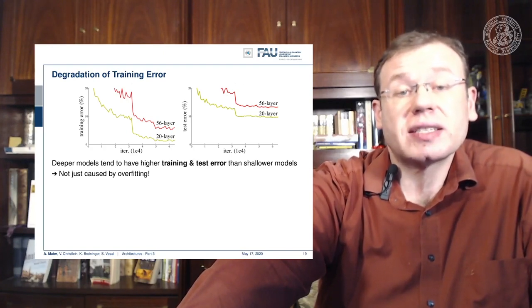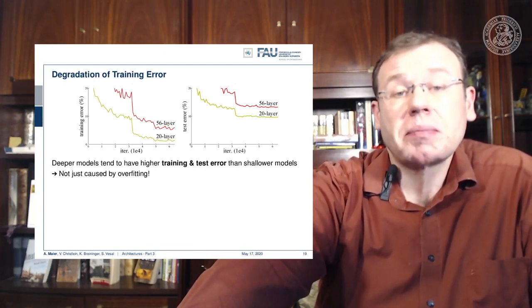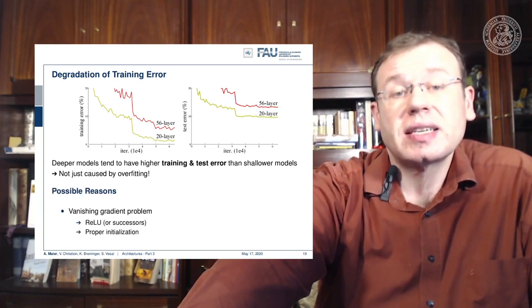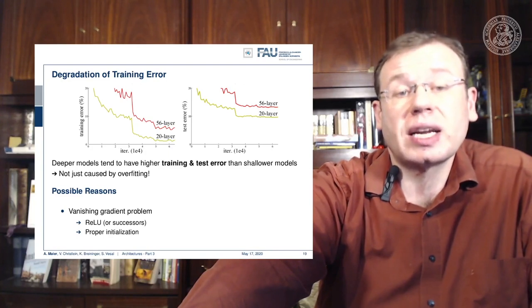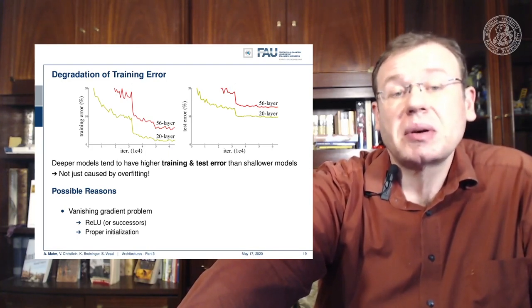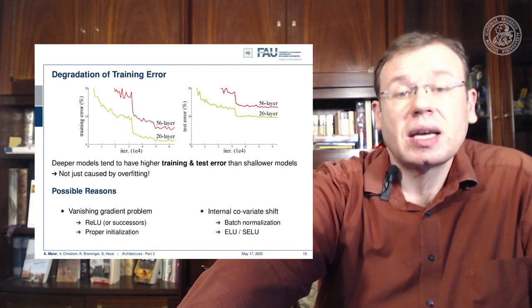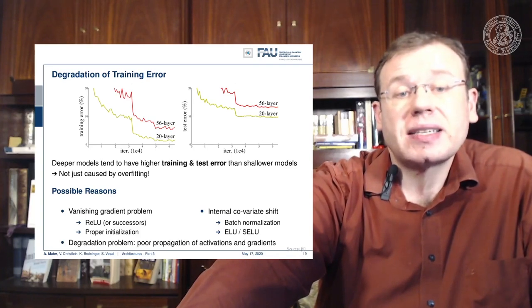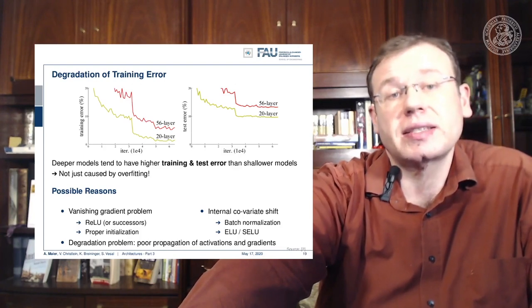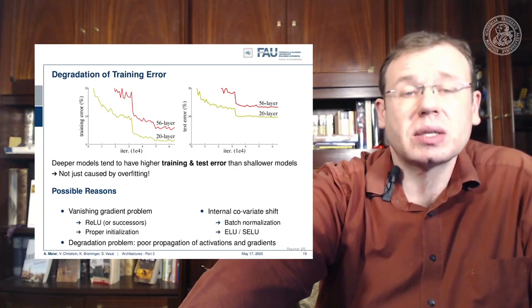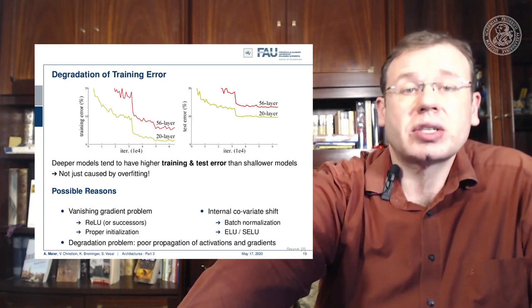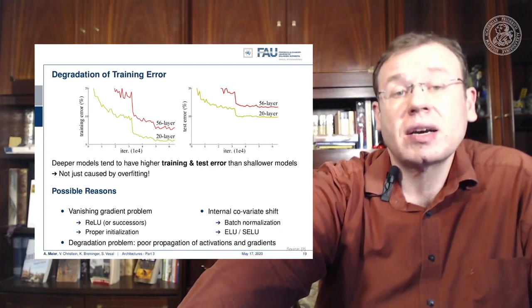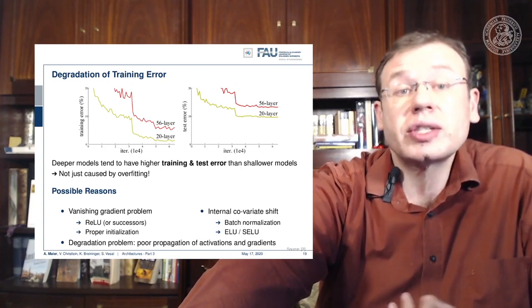This effect is not just caused by overfitting — we are building layers on top, so there must be other reasons. It's likely that it's related to the vanishing gradient problem. Maybe one reason could be the ReLUs, the initialization, or the problem of internal covariate shift, where we try batch normalization, ELUs and CELUs. But we still have a problem with poor propagation of activations and gradients. If we try to build very deep models, we get problems with vanishing gradients and can't train the early layers, which even results in inverse results on the training set.